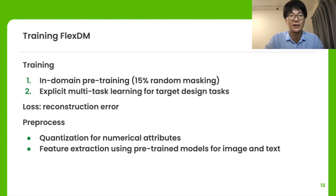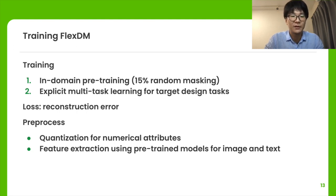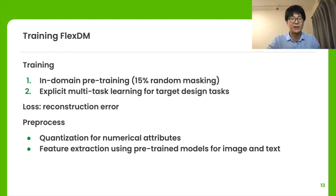Similarly to masked language modeling, the model is learned to minimize the reconstruction loss. Since processing high-dimensional data, such as raw images and text during optimization, is computationally intensive, we extract a low-dimensional numerical vector from such data using pre-trained models.